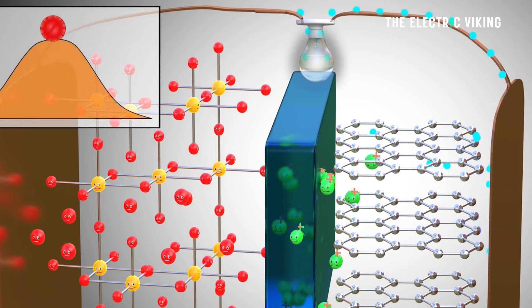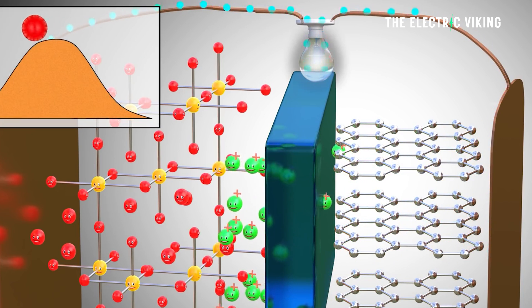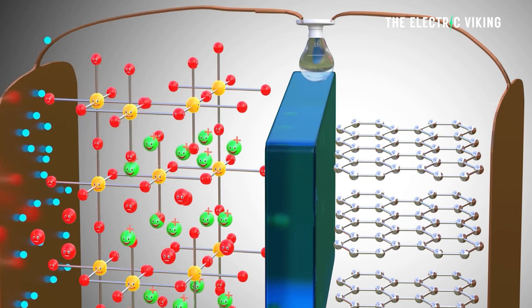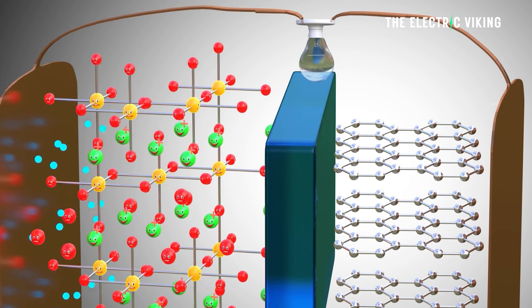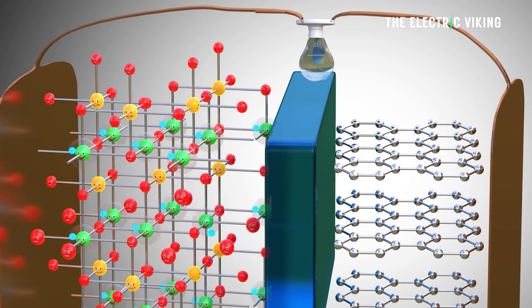When the battery is discharged, lithium-ions move from the anode to the cathode through the electrolyte releasing electrical energy. The anode also helps maintain the structural stability of the battery during cycling.